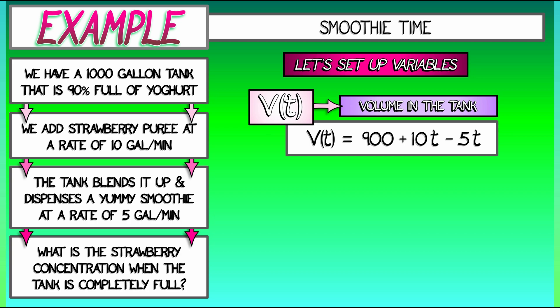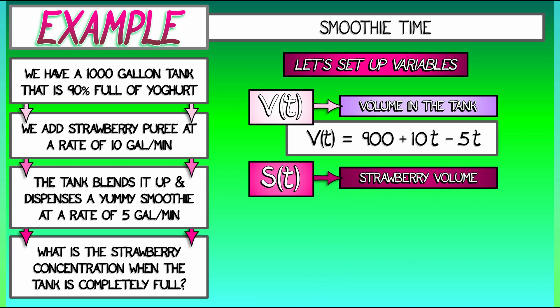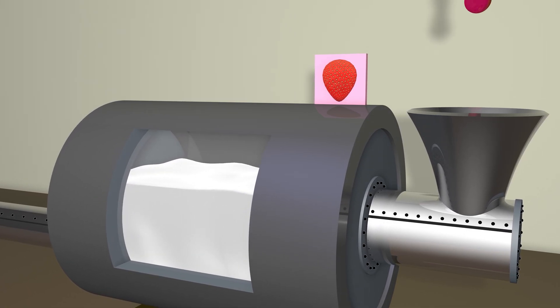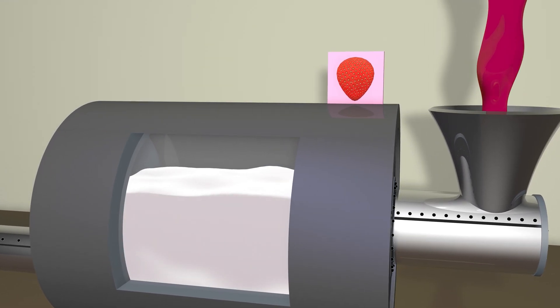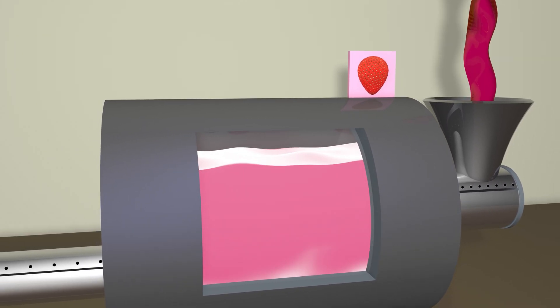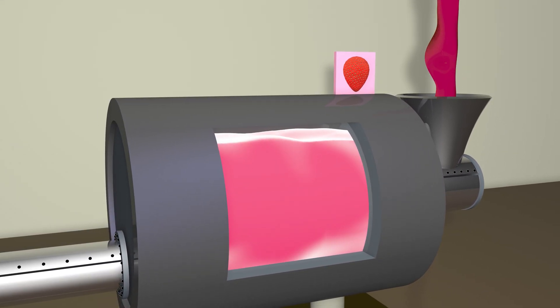What are the other relevant variables? Well, we have S of t, which is the volume of strawberry puree inside that tank. What is that? Well, it starts off at zero, and then it's coming in at a rate of 10 gallons per minute, and then, I don't know, stuff gets blended up. We'll talk about that in a minute.